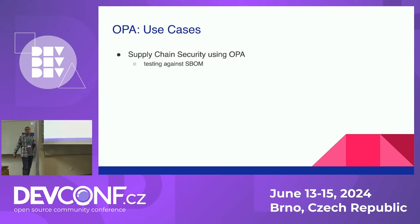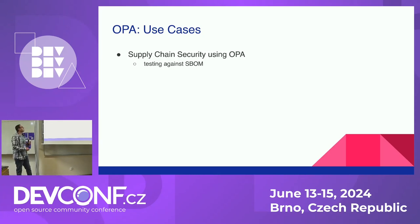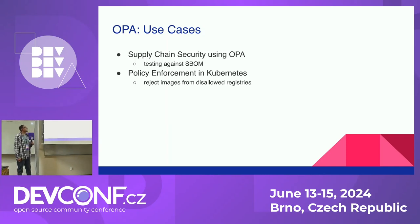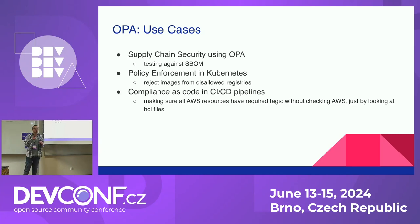Let's quickly look at the use cases I drafted for today. I picked three examples to show OPA in action. First, we'll talk about how to establish a supply chain security mechanism using OPA, writing tests against SBOM — Software Bill of Materials. Second, we'll look at policy enforcement in Kubernetes the way Gatekeeper does, with a classic example of rejecting images from disallowed registries. Third, we'll talk about how to shift security left by integrating it into our pipeline for faster compliance signaling without even touching the cloud environment.